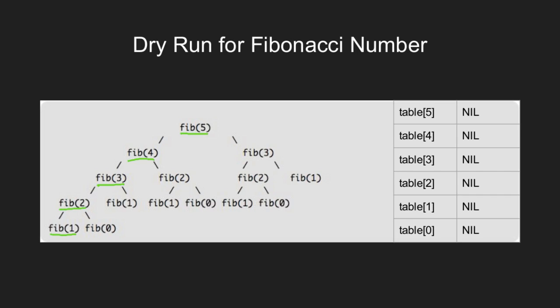Now, fib1 updates table 1 with 1 and returns 1. Then ctrl goes back to fib2, which in turn calls fib0. And similar to fib1, fib0 updates table 0 with 0 and returns 0. And once again, ctrl moves back to fib2, which now combines the solutions of fib1 and fib0 and stores the result in table 2.